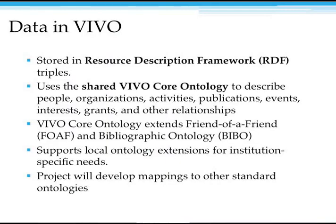VIVO data is stored internally in RDF triples. It uses the shared VIVO core ontology to describe people, organizations, activities, publications, events, interests, grants, news releases, and all sorts of other information — really a lot of context about people and researchers, how they interrelate and what they do.